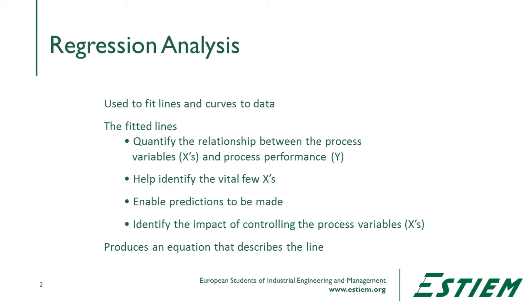Regression allows us to make predictions about processes because we have a formula, and we can extrapolate using that formula. It also identifies the impacts of these X's, or the controlling variables, in terms of the process. Because we get the equation out of this line, we can do different things with it.